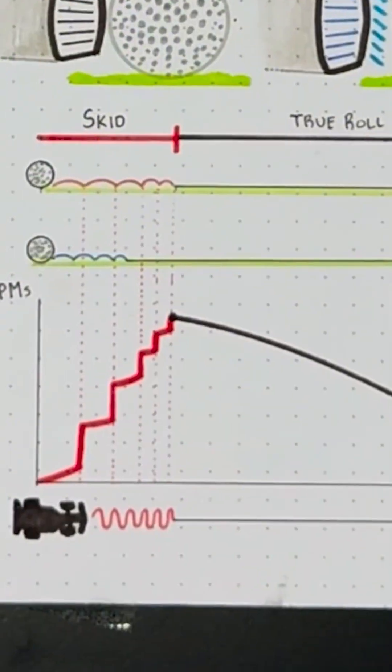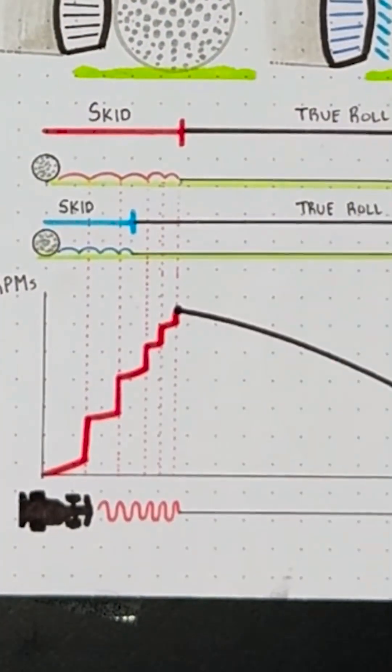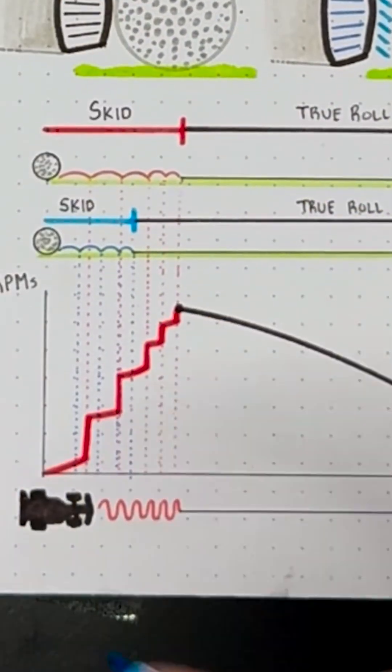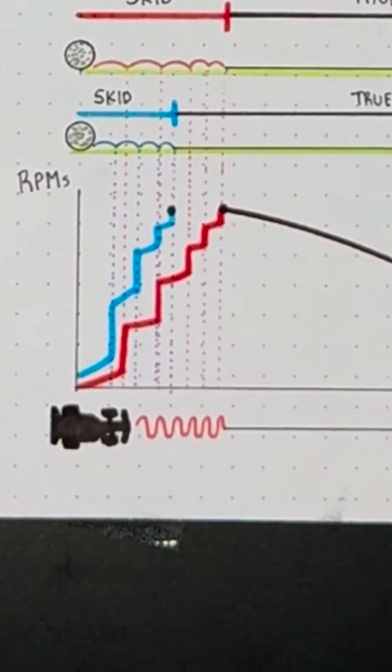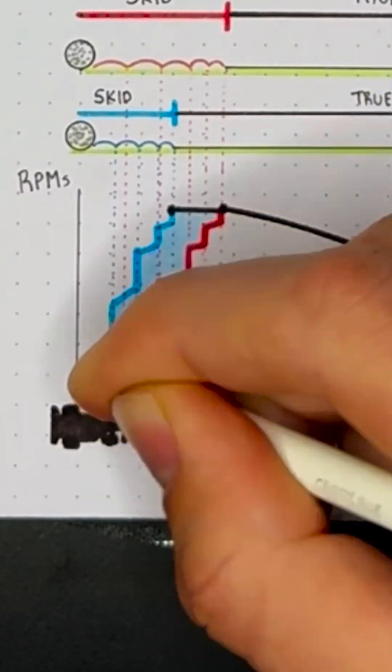If we overlay that spin chart again, this time with a spider featuring a pure roll insert, the ball starts its forward roll off the face, which minimizes skidding, and reaches its true roll sooner, helping it stay on its intended line with more consistency.